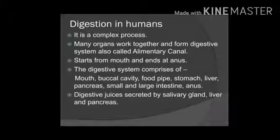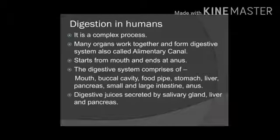As I told you before, whatever food we consume, that food has to be broken down into simpler substances, because the nutrients present in it are complex components. They have to be broken down into simpler substances so that those simpler substances can be utilized in the body. So the process by which complex components of food are broken down into simpler substances is known as digestion. Digestion in humans is a complex process — many organs work together and they form the digestive system.